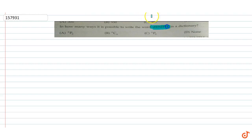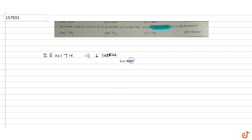The question given is: in how many ways is it possible to write the word ZENITH? ZENITH is spelled Z-E-N-I-T-H — that is six letters. Out of these six letters, none are repeating. So we will form six-letter words.